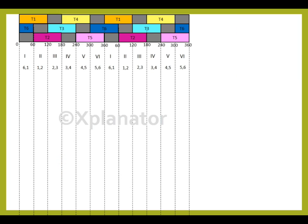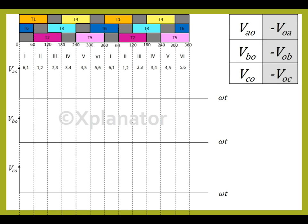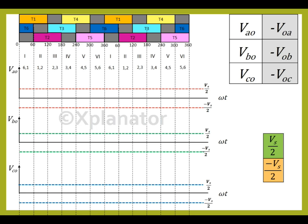Next, we will plot the values. The 3 phase line to neutral voltages to be plotted are VAO, VBO and VCO. But in some cases, the voltages VOA, VOB and VOC have been calculated. The relations are shown in the table. The calculated upper value is Vs by 2 and lower value is minus Vs by 2. We need to plot the values on the graph. So, draw the segments to accommodate Vs by 2 and minus Vs by 2. Do the same for the other two axes.